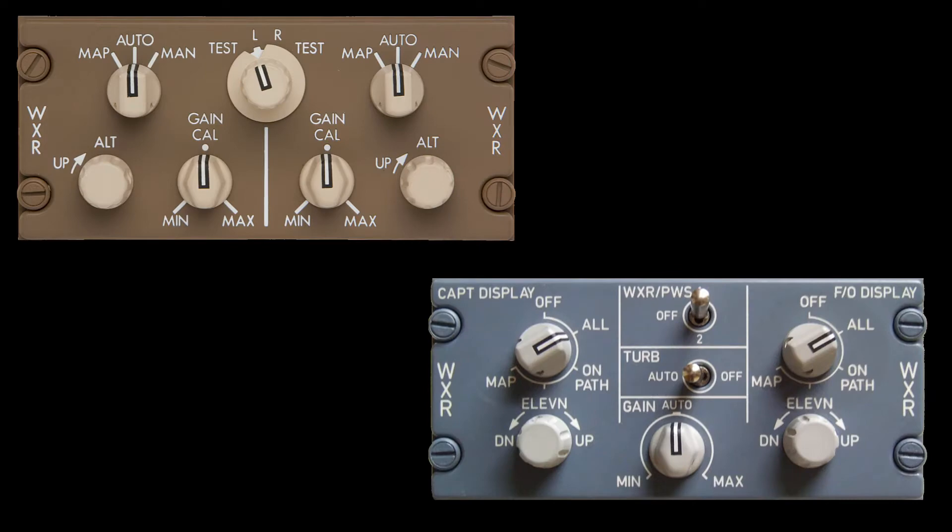One last thing before we start. Let's look at some different control panels and the interface we'll use in this example. Here we see the Boeing and Airbus control panels. On the Boeing panel, you would select man or manual analysis mode and then use the tilt knob to select the altitude slices. On the Airbus panel, you select ELEVN for elevation mode and use the elevation knob to select altitude slices. Notice that these are split control panels allowing the captain and first officer to be in different modes, have different altitude slices, gain, and range settings.